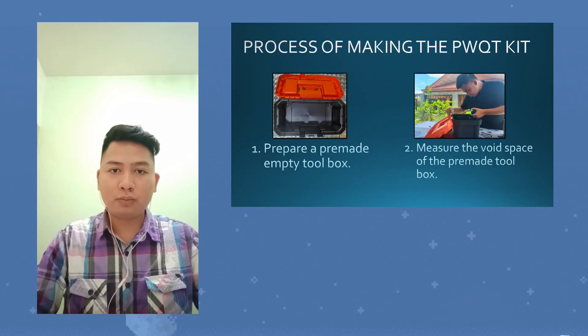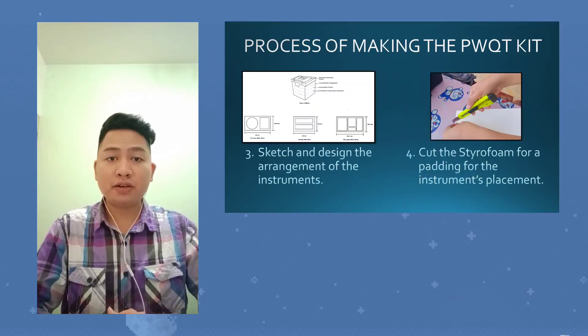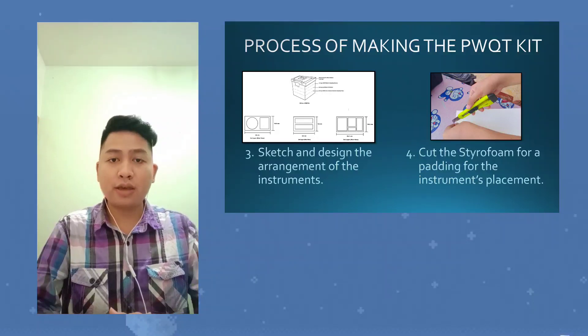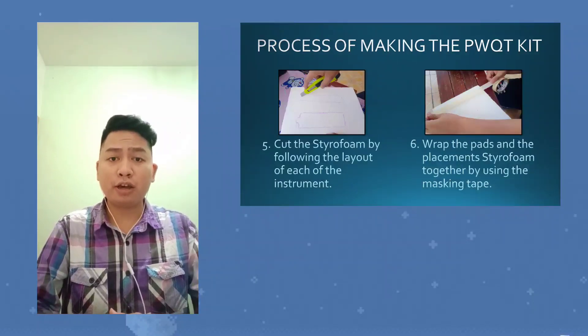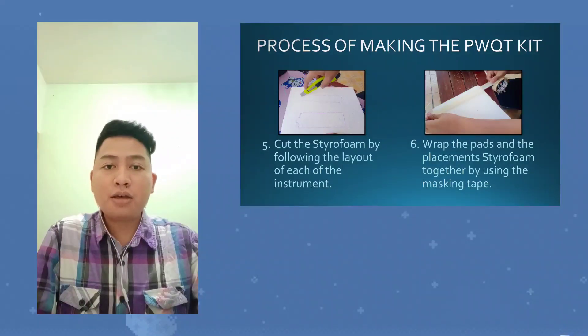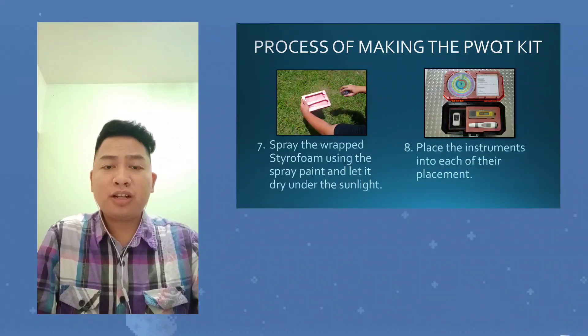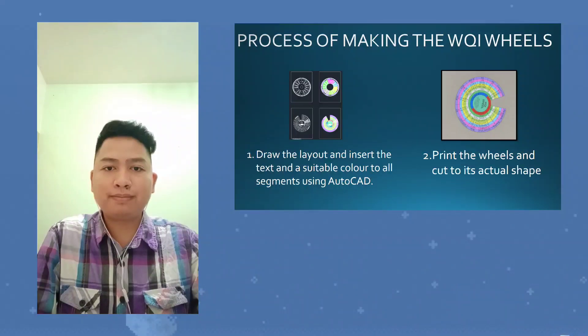The construction process for the PWQT kit is as follows: prepare a toolbox and measure it, design the arrangement and cut the styrofoam for padding, cut the instrument layout and wrap it using masking tape, spray the styrofoam and let it dry, then place the instruments into each designated placement.